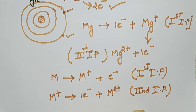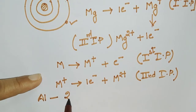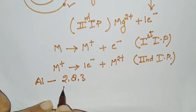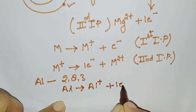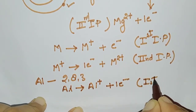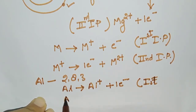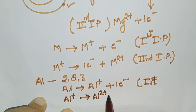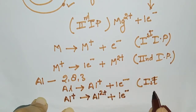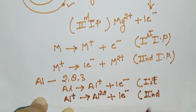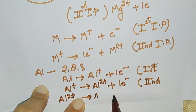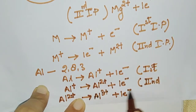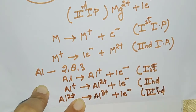Another example is aluminium, which can give 3 electrons. Its electronic configuration ends in 3 valence electrons. Aluminium gives one electron to become Al+, which is first ionization potential. Then Al+ gives one more electron to become Al2+, which is second ionization potential. Then Al2+ gives another electron to become Al3+, which is third ionization potential.